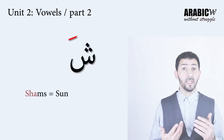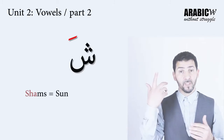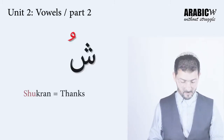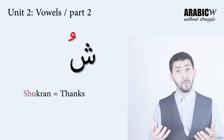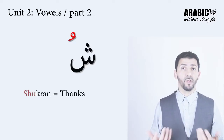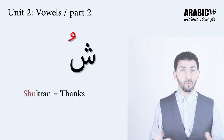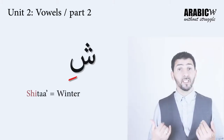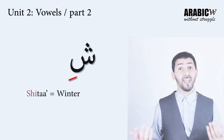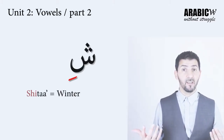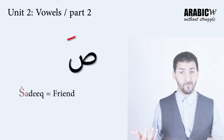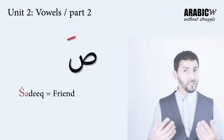شين with فتحة makes شا, like شمس. شين with ضمة makes شو, like شكرا — meaning 'thank you'. شين with كسرة makes شي, like شتاء — meaning 'winter'.